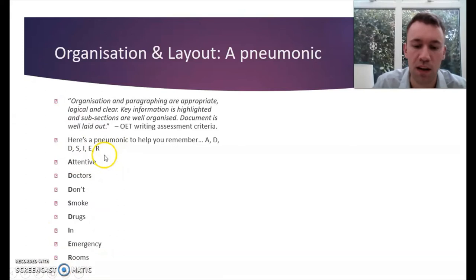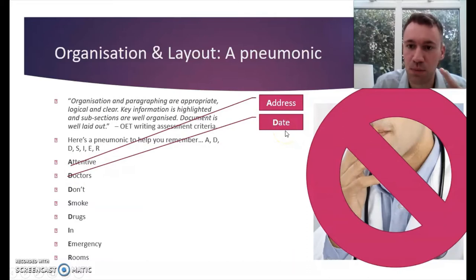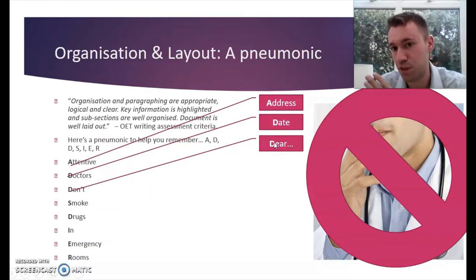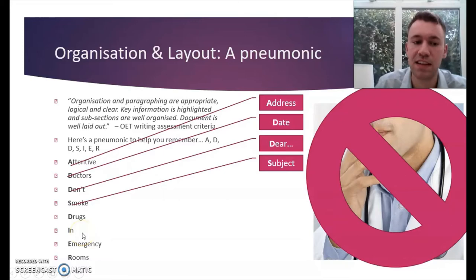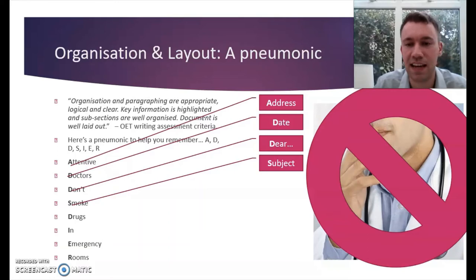So what does this mean? A — address. That's what you put at the top of your letter. D — date. That goes underneath the address. The second D — dear. The name of the person to whom you're writing. S — the subject of your letter. The subject will say R.E., which means 'regarding', followed by a colon, and then the name of the patient — their title, first name, and last name. So for example: RE: Mr. Joe Bloggs.